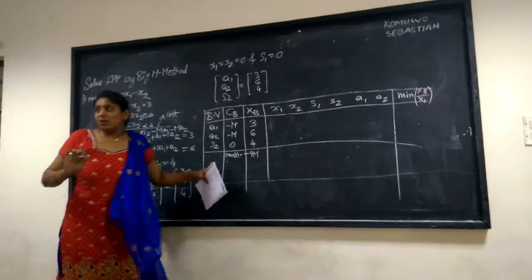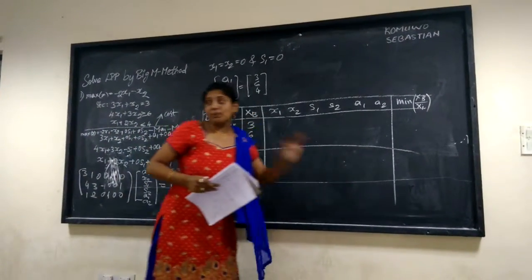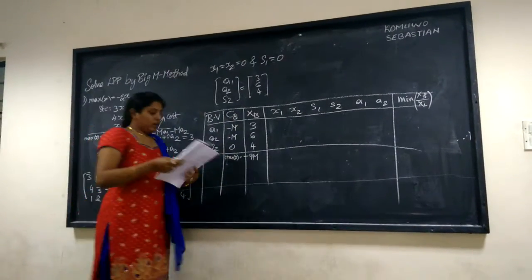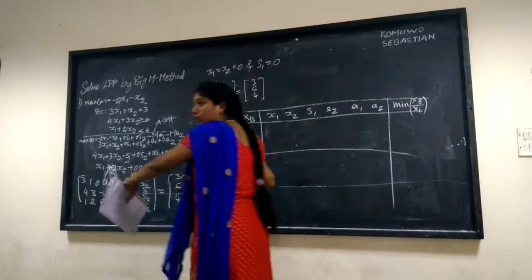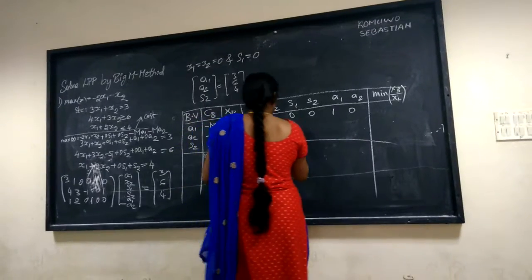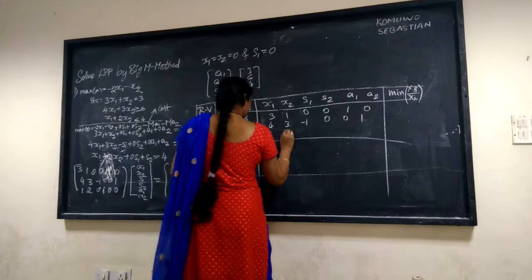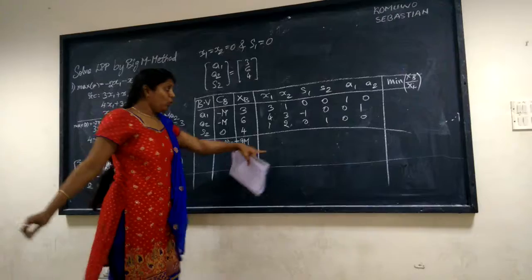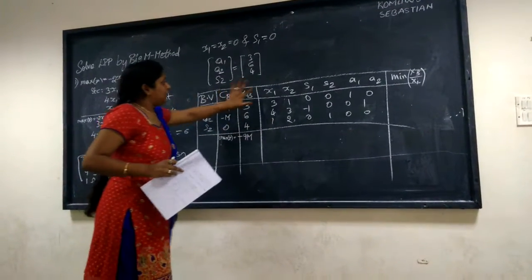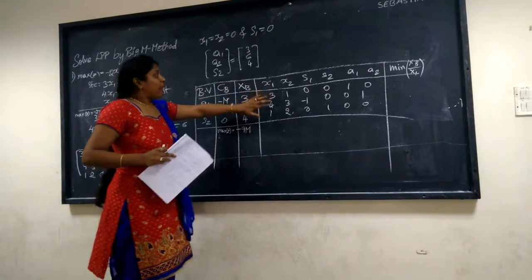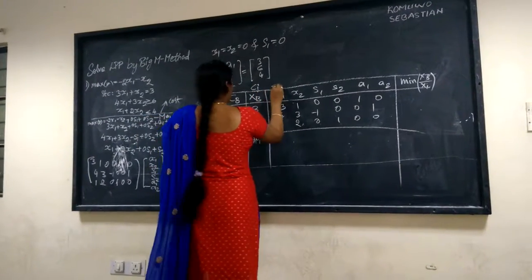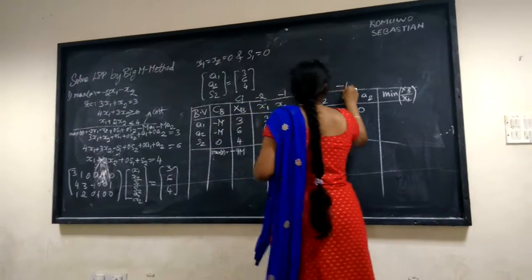The delta j values are obtained by: sum of CB × xi column − CJ. The CJ values taken from the objective function are: −2, −1, 0, 0, −M, −M. For the x1 column: (−M)(3) + (−M)(4) + (0)(1) = −7M, minus CJ (−2) gives −7M + 2. Similarly we calculate delta j for all columns.